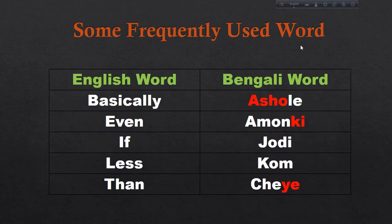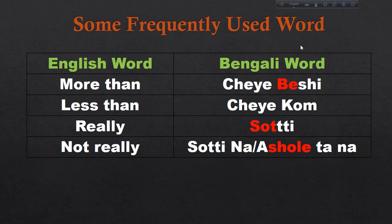'Basically' means 'asholy'. 'Even' means 'amunki'. 'If' means 'jodhi'. 'Less' means 'che kom'. 'Then' means 'che'. 'More than' means 'che beshi'. 'Less than' means 'che kom'. We use 'less than' or 'more than' when we differentiate between two things.